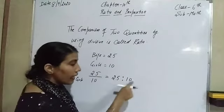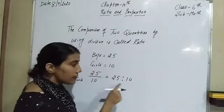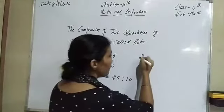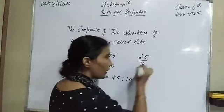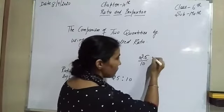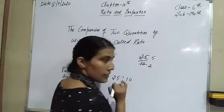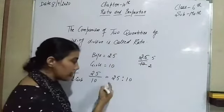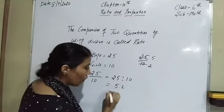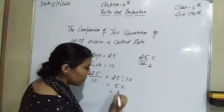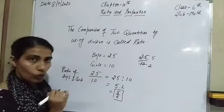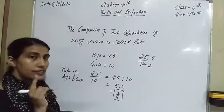After that we have to convert this ratio into the simplest form. So here is 25 by 10. We just have to cancel — 5 goes into 25 five times, and 5 goes into 10 two times. So in the simplest form it can be written as 5 ratio 2, or we can write it as 5 by 2. So that is the ratio.